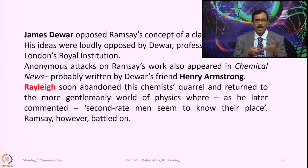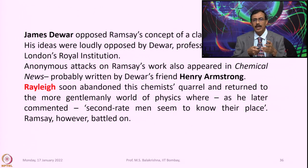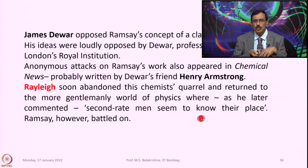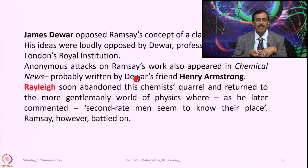Anonymous attacks on Ramsey's work also appeared in Chemical News, probably written by Dewar's friend Henry Armstrong. Rayleigh soon abandoned this chemist's quarrel and returned to the more gentlemanly world of physics where, as he later commented, second-rate men seem to know their place. Ramsey however battled on — Rayleigh, after seeing unworthy criticism, gave up and got back to physics research, but Ramsey continued.